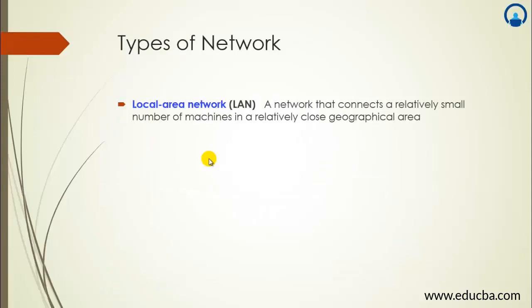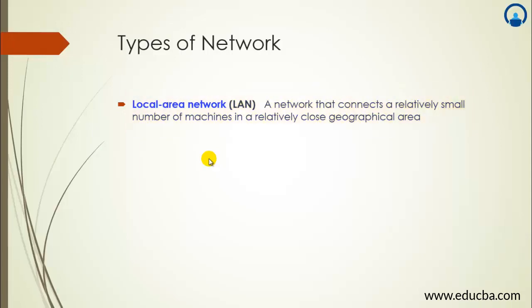We will start with different types of networks. First, let's look at LAN, which is the Local Area Network. It's basically a network that connects a relatively small number of machines in a relatively close geographical area. Two or more computers or networking devices connected in a room, building, or campus are said to be connected in a LAN. This is a normal LAN which we can set up in a home, room, office, or small area.